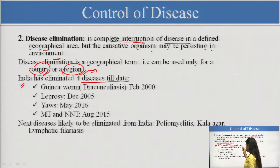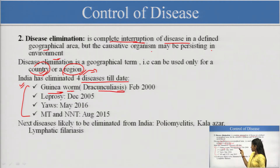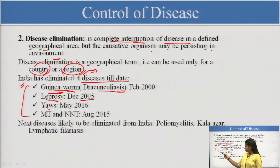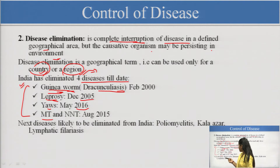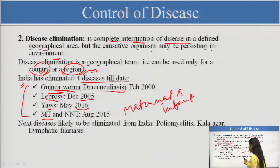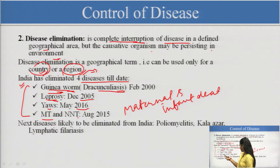India has eliminated four diseases till date. These are important data you should keep note of. First is Guinea worm, also known as Dracunculiasis. India has eliminated this disease, but we do not use the term 'eradicated' because some other countries may still have it. Leprosy was eliminated in December 2005. There is also one infection eliminated in 2016. Then maternal and neonatal tetanus (MNT and NNT), which are responsible for causing maternal and infant death, were also eliminated. That is why we have a program for tetanus injections given at the time of pregnancy.